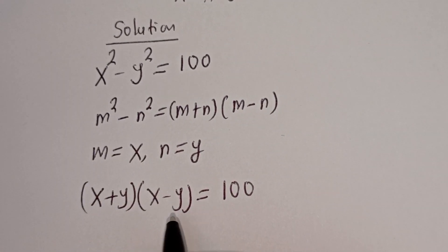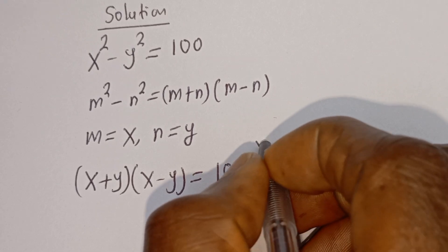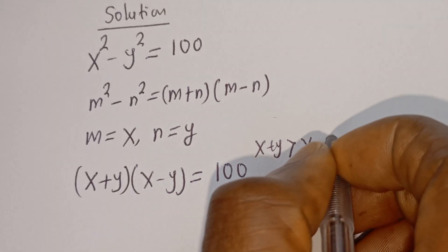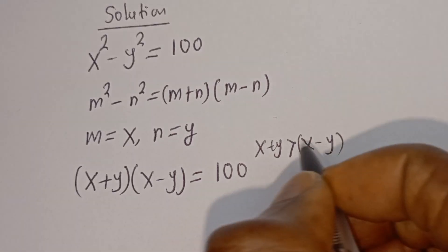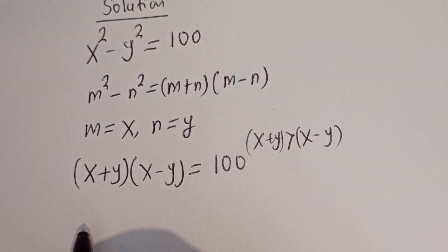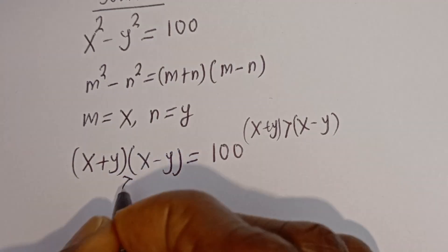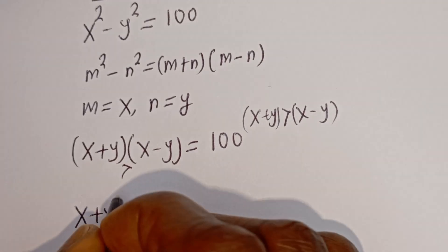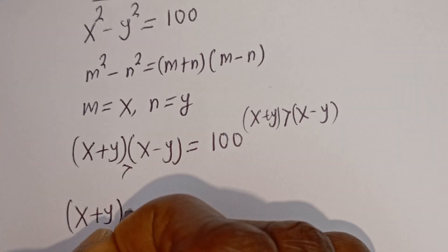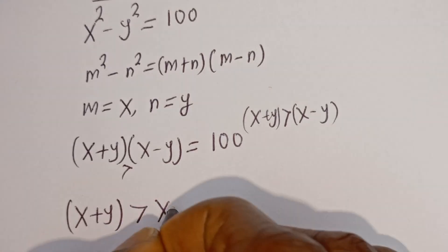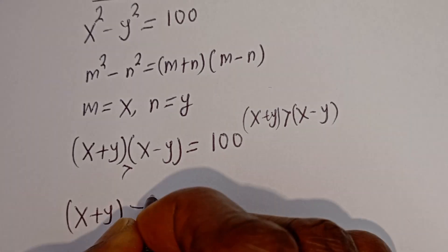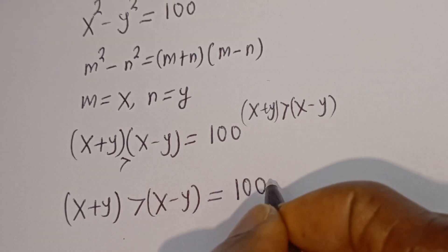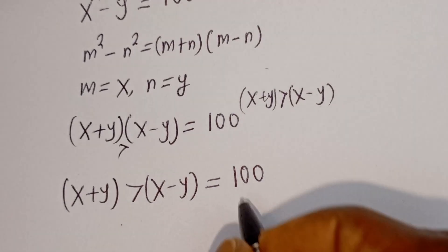From here, X plus Y is greater than X minus Y, and their product is equal to 100. So we need to find factor pairs of 100.